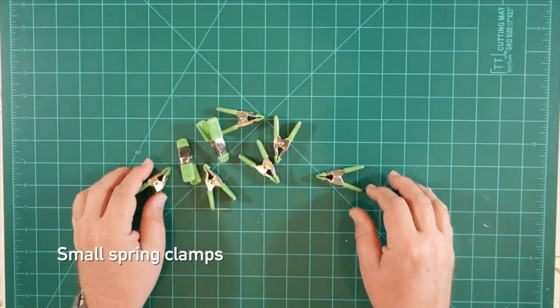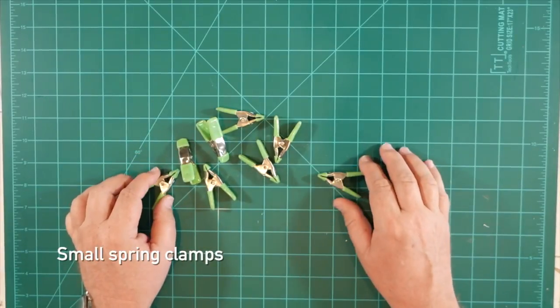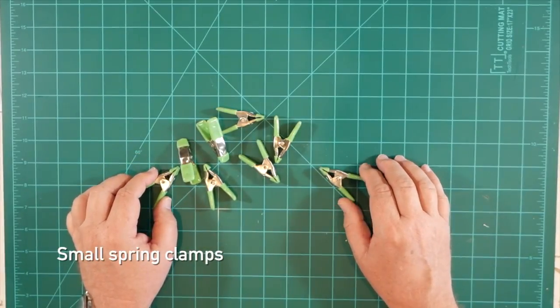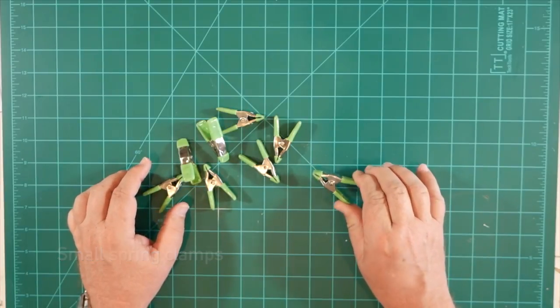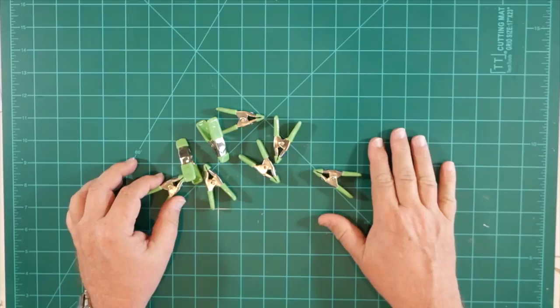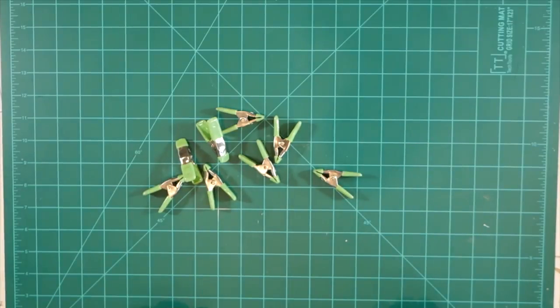We'll also want to have on hand an assortment of clamps, especially for the fin assembly step. These are small spring-loaded clamps that I got from Home Depot. I think I paid 37 cents a piece for them. I recommend you go purchase about 15 to 20 of these to have on hand during the build.